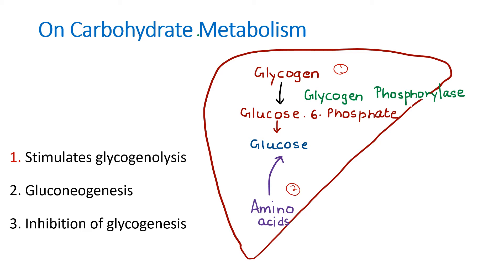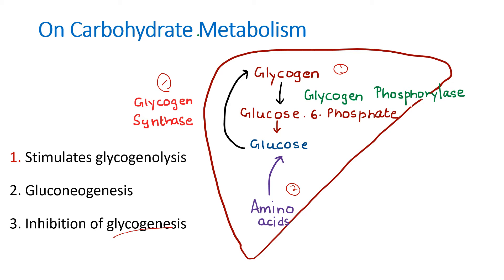The third action: glucose can normally be converted to glycogen by the enzyme glycogen synthase. What glucagon does is inhibit this glycogen synthase, resulting in inhibition of glycogenesis. So the three actions are: stimulation of glycogenolysis, gluconeogenesis, and inhibition of glycogenesis by inhibition of glycogen synthase.